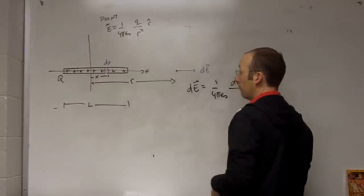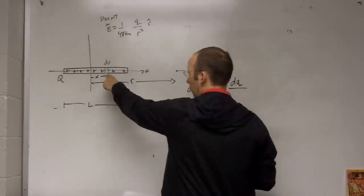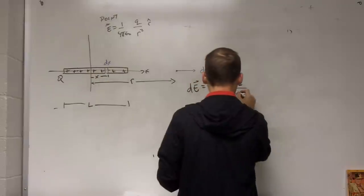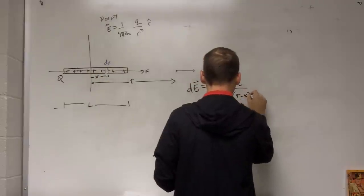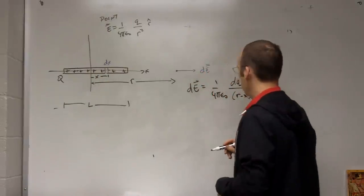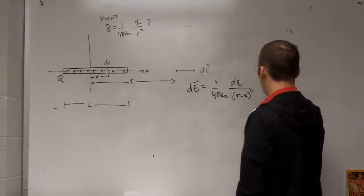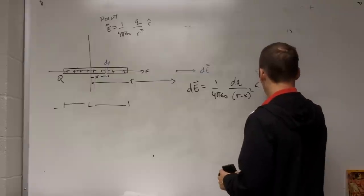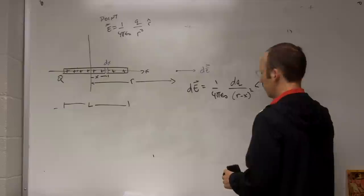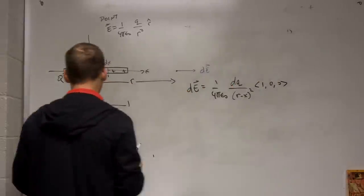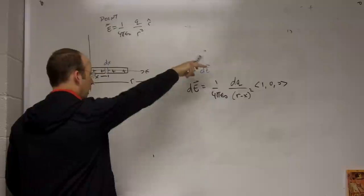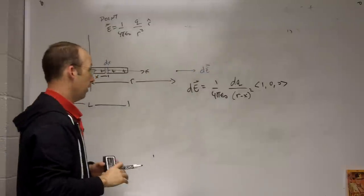And then how far away is it squared? Okay, well, it's going to be, this is going to be R minus X. That's the distance away. Okay, and then what's the direction of the electric field? I'll just say X hat. Okay, or I could write this as 1, 0, 0. Okay, so because I know that if I have a point charge there and this is positive, then that's going to make an electric field going that way.